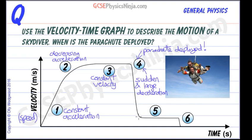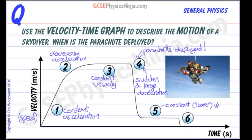At five that deceleration has tailed off, and now we can see the velocity or speed is constant. This is a constant but much lower speed than it was when the skydiver was falling without the parachute. So constant and lower velocity.